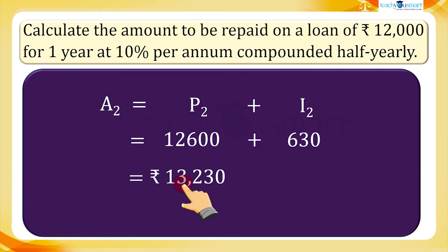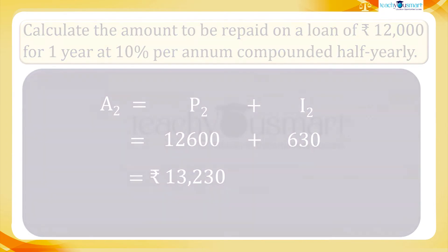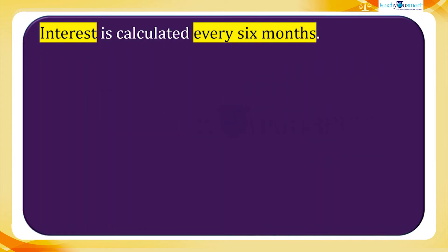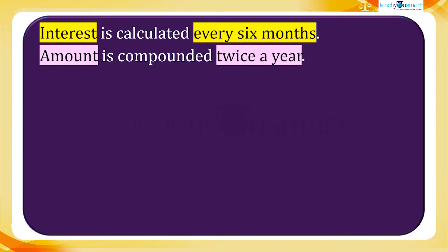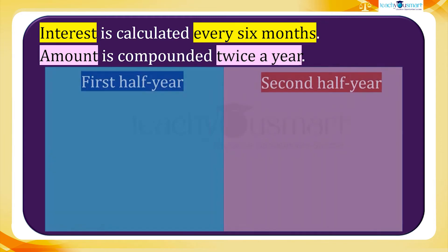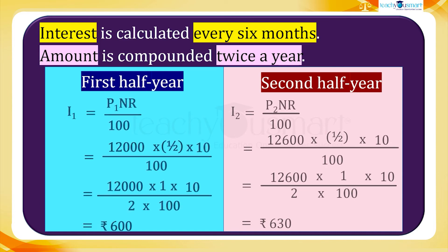This is the amount to be paid at the end of one year. From the above calculation we can say the interest is calculated every six months and the amount is compounded twice a year. Did you notice that since the interest is compounded half yearly, we compute the interest every six months?